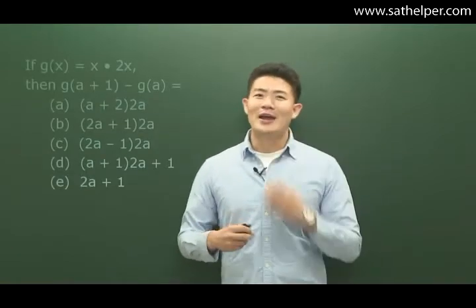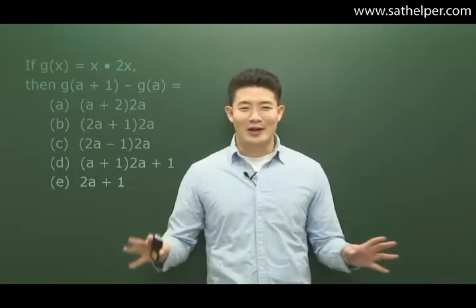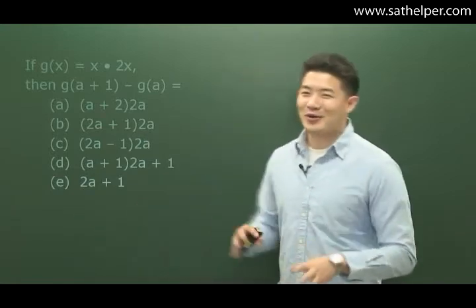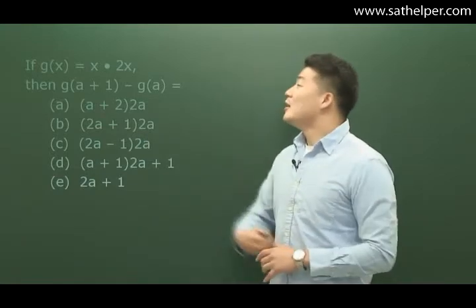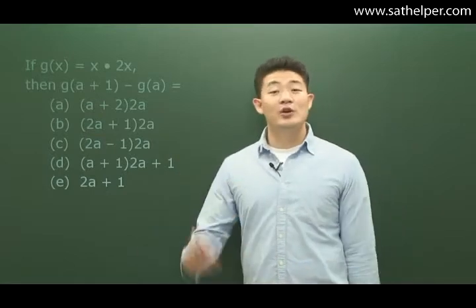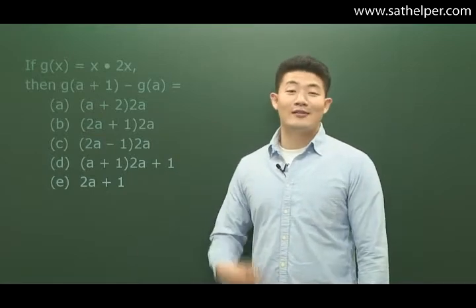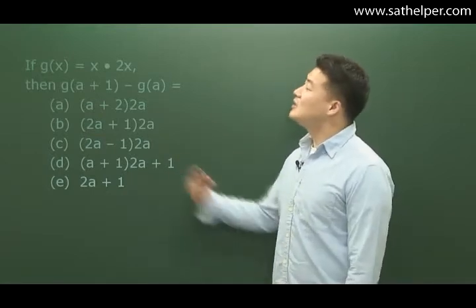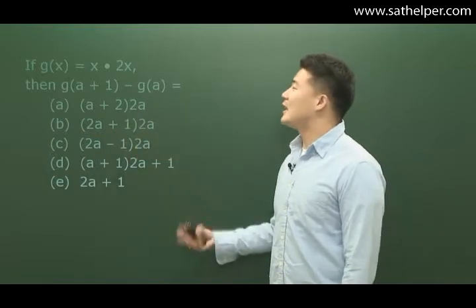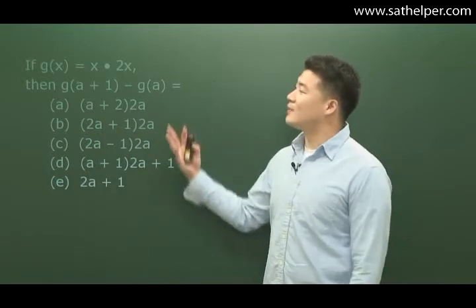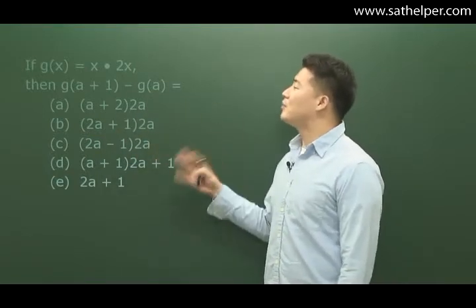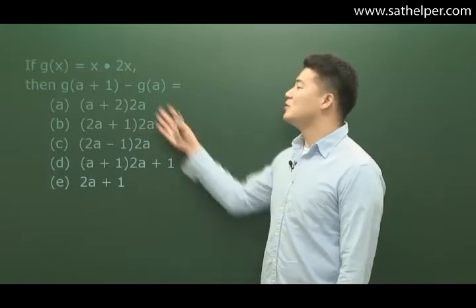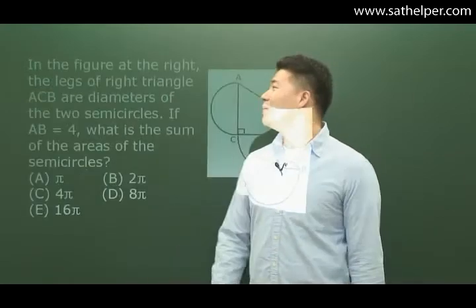It's going on right away, and don't worry, we're not going to jump right into problems. But these are the types of problems that you will be seeing on the SAT 1 Math. For example, it says if G of X is equal to X times 2 to the X power, then G of A plus 1 minus G of A is equal to, etc. So, this type of problem.